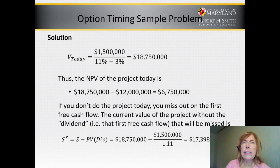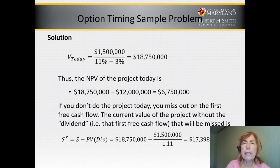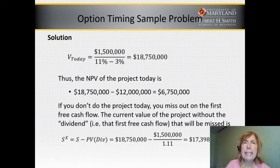If we value the project today, the value of the future cash flows is $18.75 million. Subtracting the cost of $12 million gives us an NPV of $6.75 million. Now, if we wait a year, we will not get that first cash inflow of $1.5 million. The text says to view that like a lost dividend and discount it at 11% or WACC, so the value of that lost cash flow is negative $1.3 million, reducing the value of the project from $18.750 to $17.398 million.